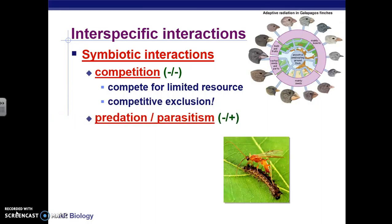There's also a symbiotic interaction called parasitism. That's when one organism benefits and the other organism is hurt. Usually this is a predator-prey relationship. For example, with rabbits and lions: the rabbit is eaten by the lion, the lion benefits from eating the rabbit, and the rabbit is obviously hurt. That's an example of a parasitism relationship — one organism benefits and the other is hurt.